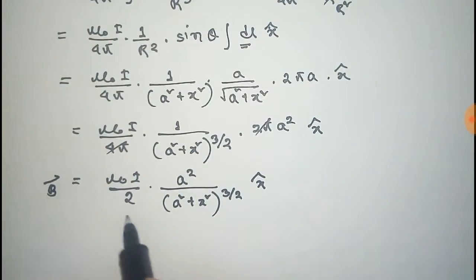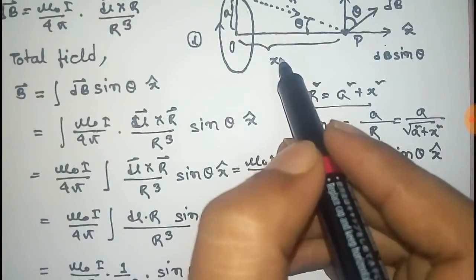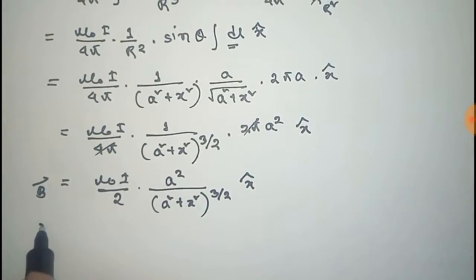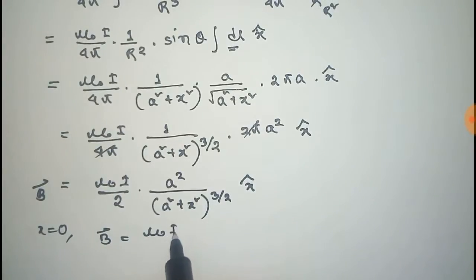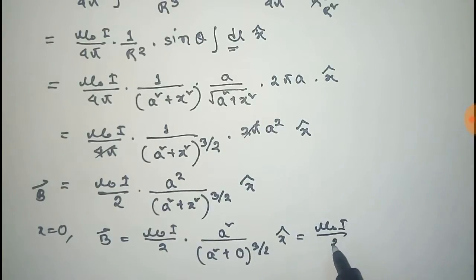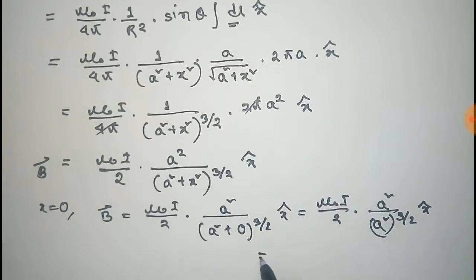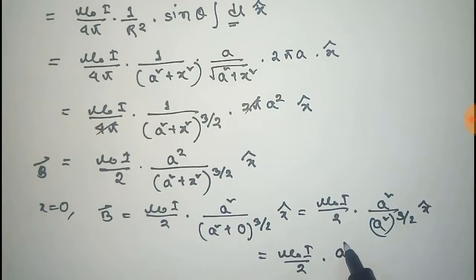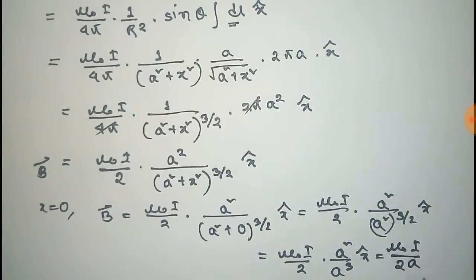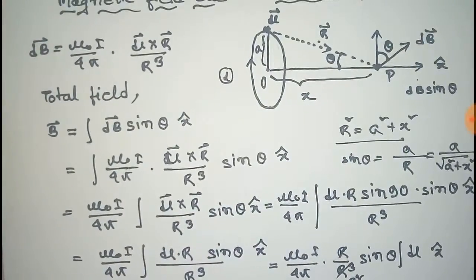Thus we get the magnetic field at point P due to the loop. Now for the magnetic field at the center of the loop, we set x equal to 0. The magnetic field at the center equals mu-naught i by 2 times a-squared by (a-squared) to the power 3 by 2, x-cap, which equals mu-naught i by 2 times a-squared by a-cubed, x-cap. That equals mu-naught I by 2a. Thus we get the magnitude of the magnetic field at the center of the loop in the direction of x-cap.